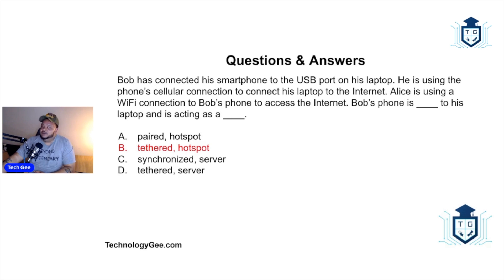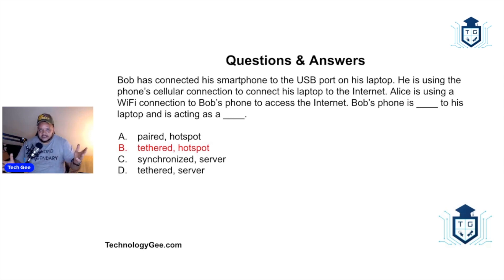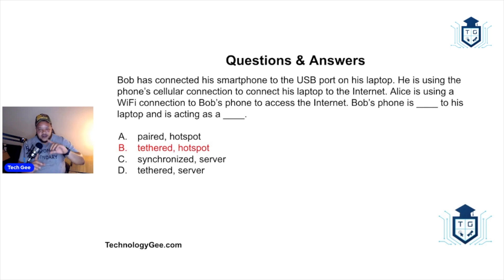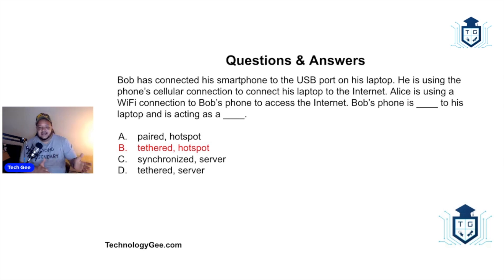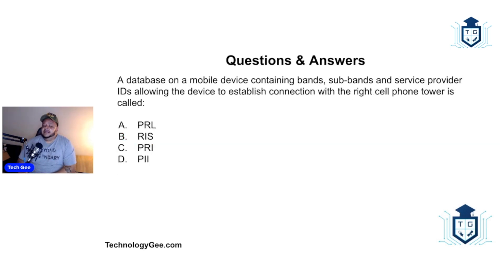Tethering and hotspots are essentially the same thing — one is a physical connection and the other is Wi-Fi. Bob's phone has been transformed into what's called a PAM — phone as modem — serving as his gateway to give his laptop internet access, similar to a router. Alice connects to his phone wirelessly via the hotspot to access the internet through his phone's cellular connection.